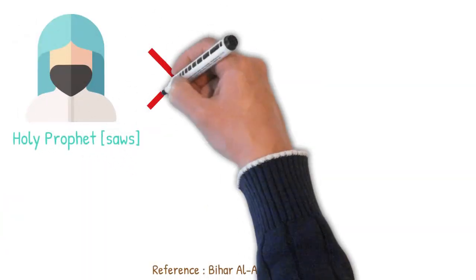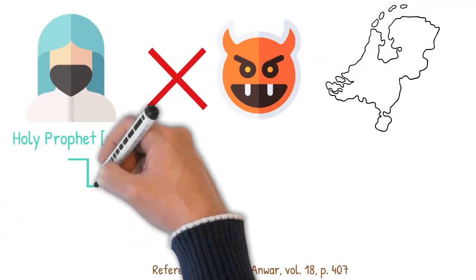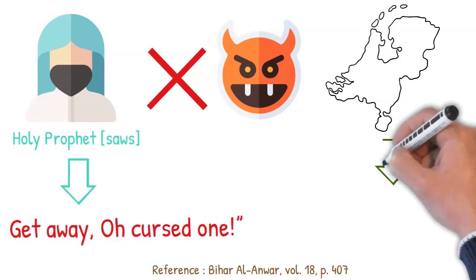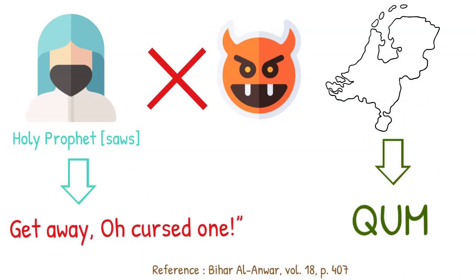Holy Prophet had banished Shaitan from this area, asking him, Get away, O cursed one. And this is how the name of Qum came about.